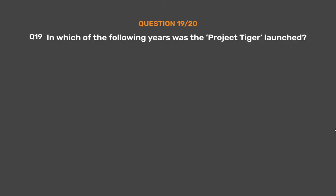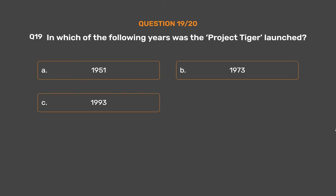Question number 19. In which of the following years was Project Tiger launched? Option A: 1951. Option B: 1973. Option C: 1993. Option D: 2009.